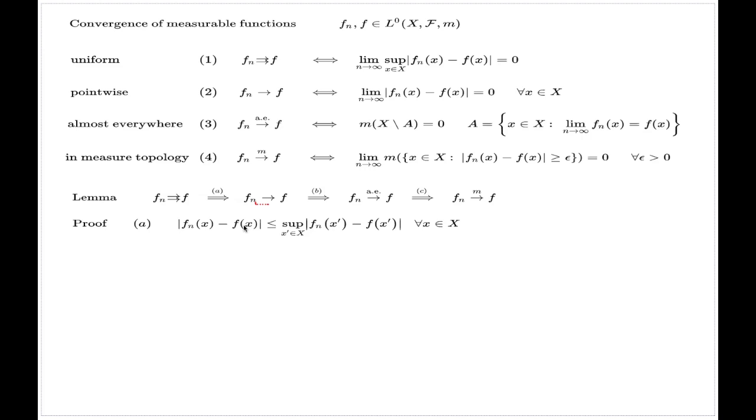Part B implication is also very simple because if you have the pointwise convergence, then the associated set A, the convergence set for the sequence fn, will be just the whole universal set. And so, this one will be just empty one, that's why you have this, and in turn you have that the set difference with the complementing set will be empty set. That's why the measure of that is zero.